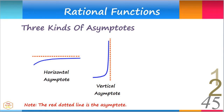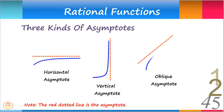When a linear asymptote is not parallel to the x or y-axis, it is called a slant asymptote, or an oblique asymptote. The curve runs closer and closer to this oblique asymptote but will never intersect nor touch it.